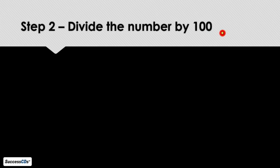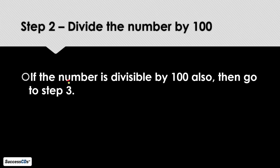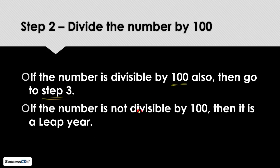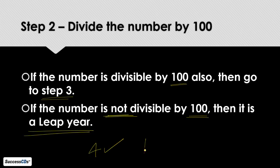Step 2: We will divide the number by 100. Again there are two results. If the number is also exactly divisible by 100 with no remainder, then we go to Step 3. If the number is not divisible by 100, then we say that it is a leap year. So any number that is divisible by 4 but not divisible by 100 is a leap year.